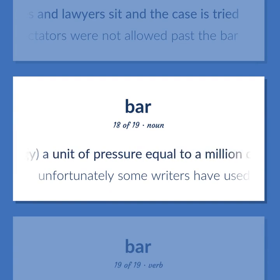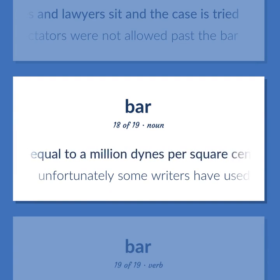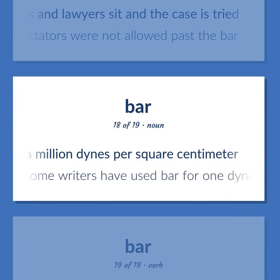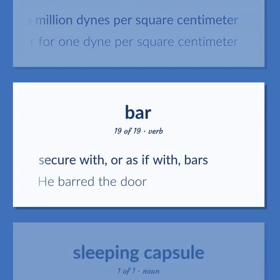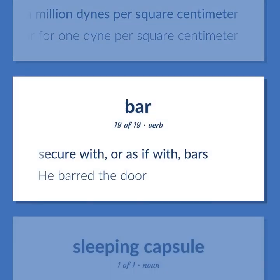Meteorology: a unit of pressure equal to a million dynes per square centimeter. Unfortunately, some writers have used bar for one dyne per square centimeter. Secure with, or as if with, bars. He barred the door.